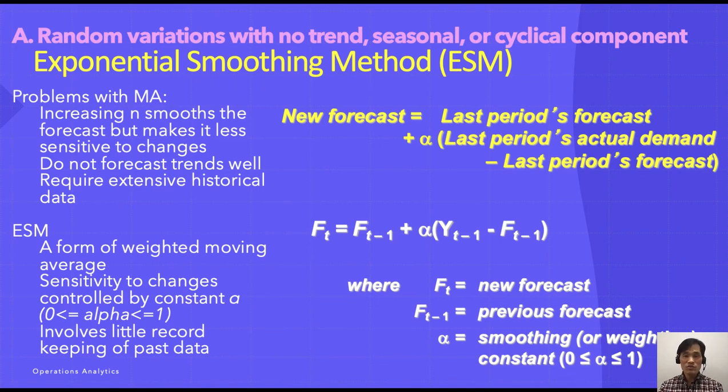Exponential smoothing method is a form of weighted moving average designed so weights decline exponentially and most recent data weighs the most. It uses a smoothing constant alpha which ranges from zero to one, and the value is chosen by the forecaster. The advantage is that it's much simpler than weighted moving average, keeps minimum data, and produces improved results.